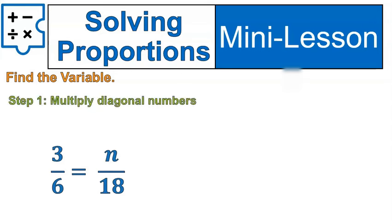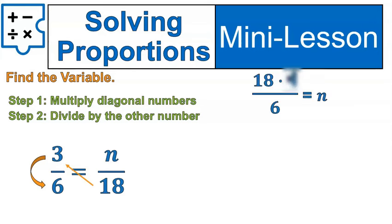Let's go through the steps one more time. As a reminder, first off, we multiply the diagonal numbers, then we divide by the remaining number. In this case, we multiply 18 times 3, and then divide by 6. That will give us our N value, the value for that variable N, N for number.